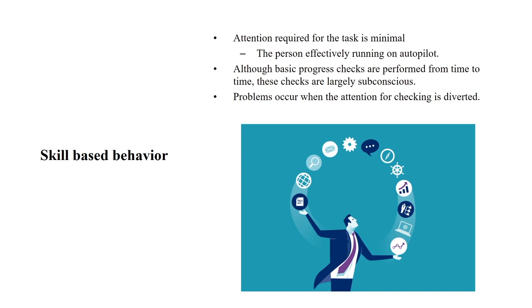What is skill-based behavior? The attention required for the task is minimal — the person is effectively running on autopilot, it is automatically happening with no effort required. Although basic progress checks are performed from time to time, these checks are largely subconscious. Problems occur when the attention for checking is diverted — when you are fully attentive and automatically doing this, there is no chance of mistake. But as soon as something diverts attention, there will be a chance of making a mistake.